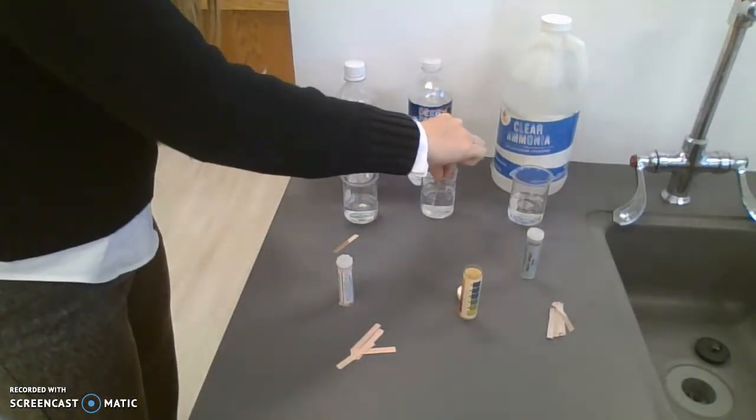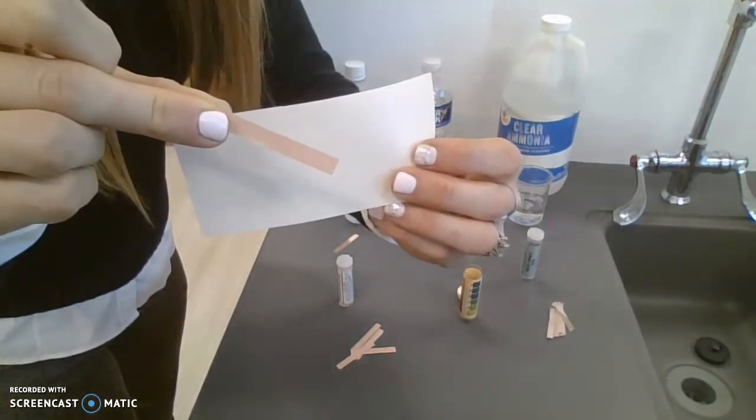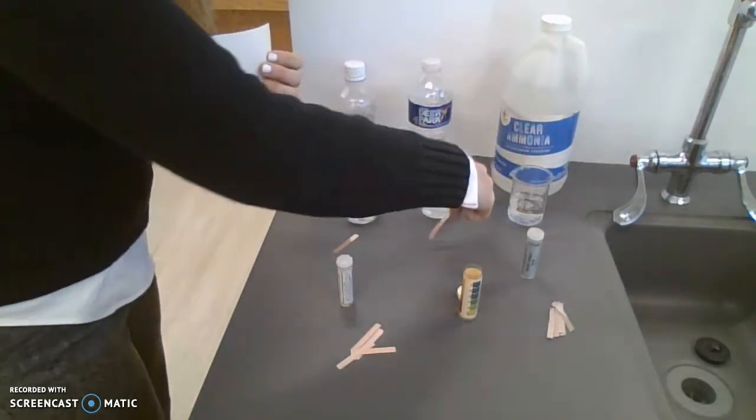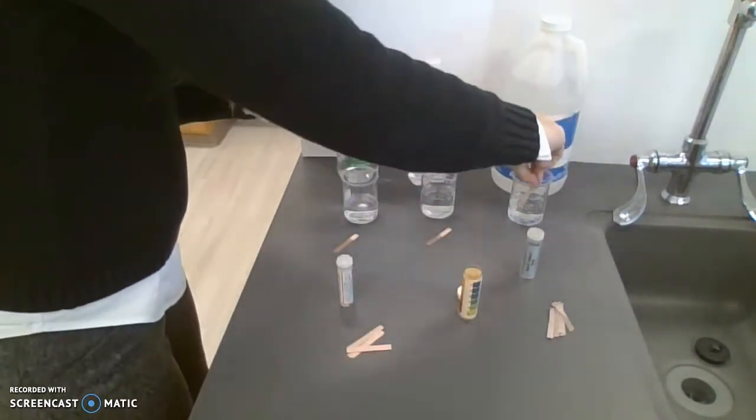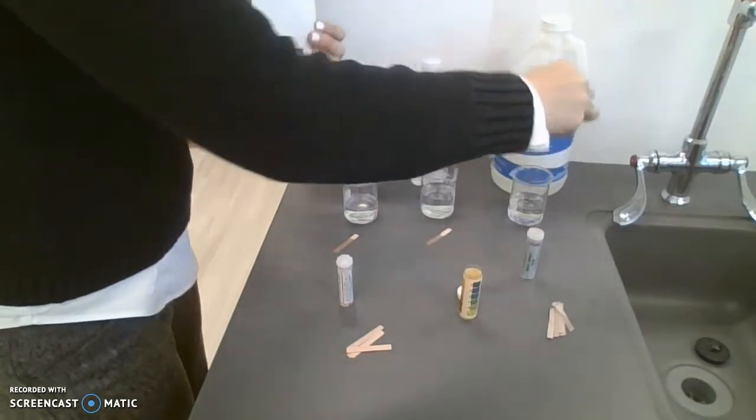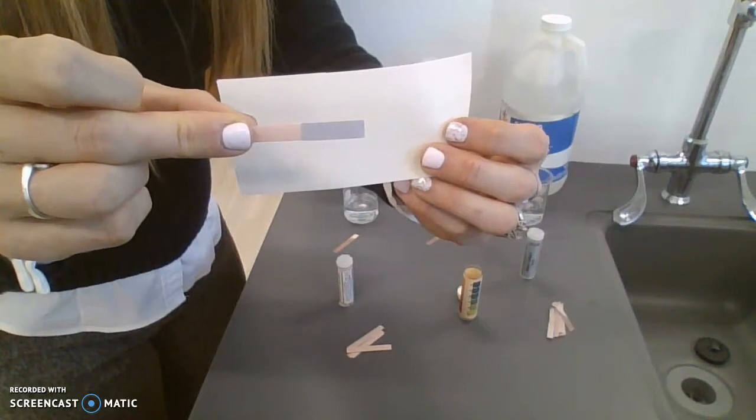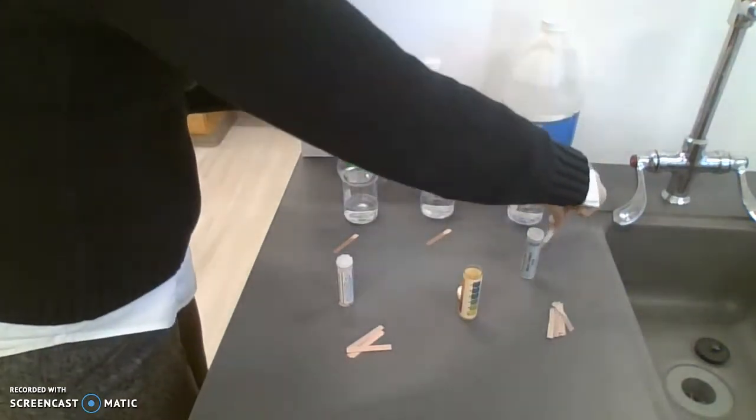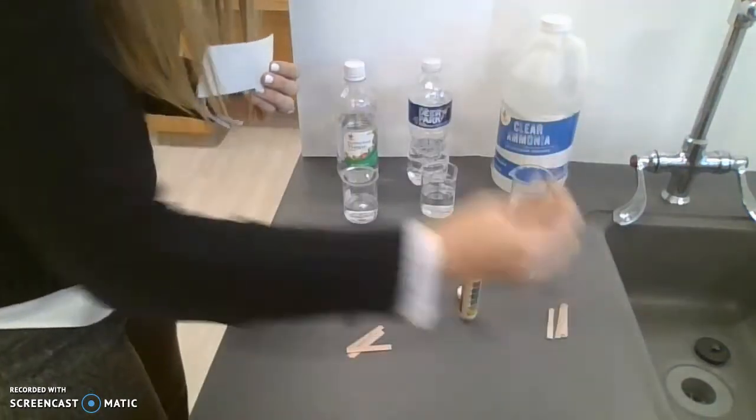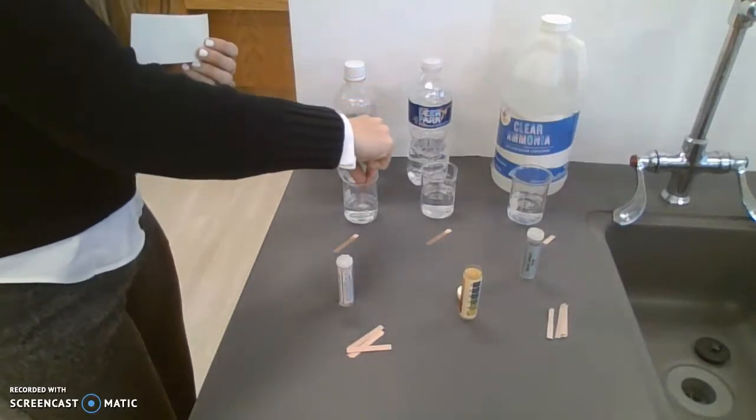So if I dip red litmus paper in water, it just appears to be wet. And red litmus paper in a base will turn blue. Bases turn blue.